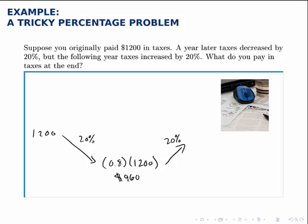And so if we have 120% of that 960, that reduced amount, we multiply 1.2 times 960. And we find that at the end, the amount you pay is $1,152.